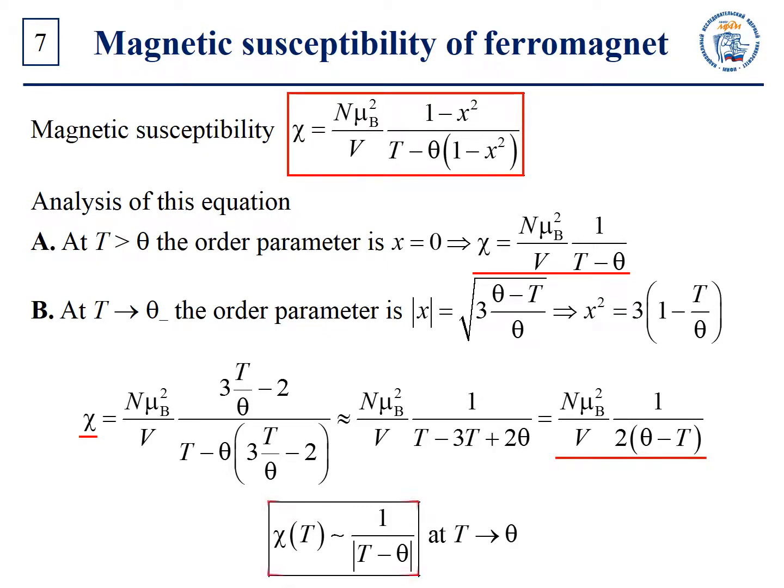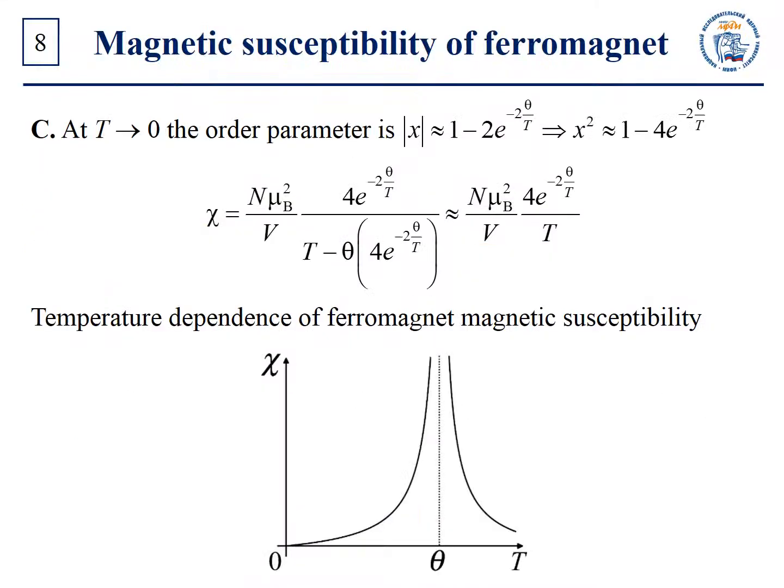Let us unify these results. Finally, at T tending to zero, the order parameter has the following form. In this case, the expression for magnetic susceptibility looks like this. Thus, the magnetic susceptibility exponentially tends to zero as T tends to zero. The resulting temperature dependence of chi is shown on the picture. Why does the magnetic susceptibility tend to zero both as T tends to zero and as T tends to infinity? The reason is that in both cases there is nothing to order: at T tending to zero, all the magnetic moments are already ordered even without a magnetic field, and at T tending to infinity, atoms do not have mean magnetic moments.